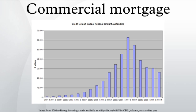18 percent were held by asset-backed trusts, 12 percent were held by government-sponsored enterprises and agency and GSE-backed mortgage pools, and 10 percent were held by life insurance companies.